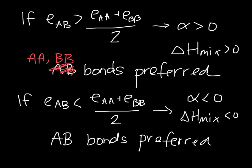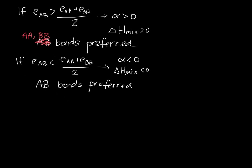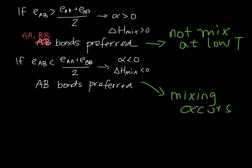In the first case, it does not want to mix. At low temperatures, it won't. At high temperatures, it might. But we will tend to see separation of the atoms into two different phases. In this particular case, mixing will occur, because it's energetically favorable for these bonds to form. That's the origin of this alpha term in the heat of mixing equation.